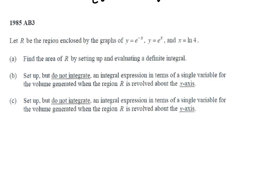Okay, 1985 AB3. We have the region enclosed by the graphs of y equals e to the negative x, y equals e to the x, and x equals ln of 4.